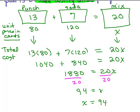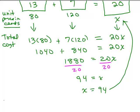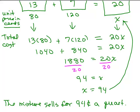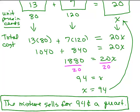Now let's go back and remember what X stood for. X, what did that stand for? It stood for the unit price in cents of the mixture. So that's exactly what we are looking for. So it looks like the answer is going to be the mixture sells for 94 cents a quart. I think that's what we're looking for. But of course, I'm going to check and make sure that would make sense.